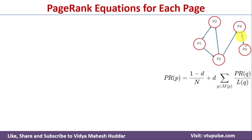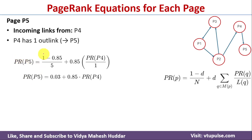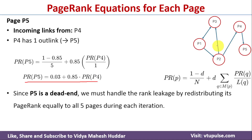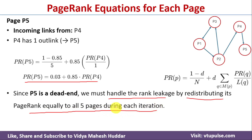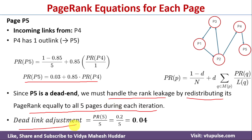For P5, there is one incoming link from P4, and P4 has one outbound link to P5. So: PageRank(P5) = 0.03 + 0.85 × PageRank(P4). Since P5 is a dead end, we must handle rank leakage by redistributing its page rank equally to all five pages during each iteration. The dead link adjustment = PageRank(P5) / 5. Initially, PageRank(P5) = 0.2, so the dead link adjustment = 0.2 / 5 = 0.04.